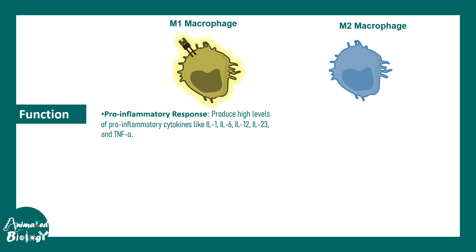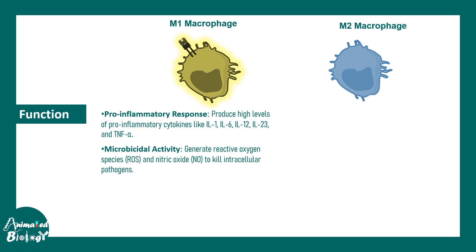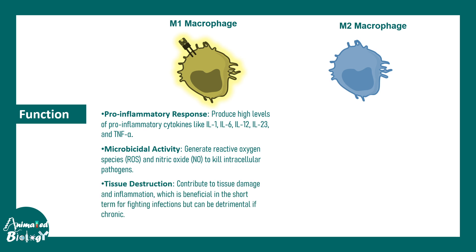In terms of function, M1 macrophages have pro-inflammatory activity and drive chronic inflammation. They secrete inflammatory mediators including IL-1, IL-6, IL-12, and IL-23. They also have microbicidal activity, killing microbes using reactive oxygen and reactive nitric oxide species. This can lead to tissue destruction, which is beneficial short-term but can be damaging in prolonged situations.